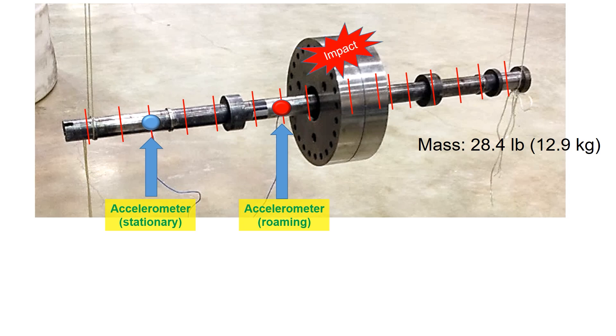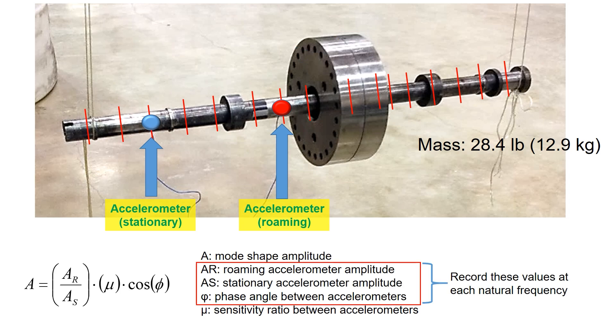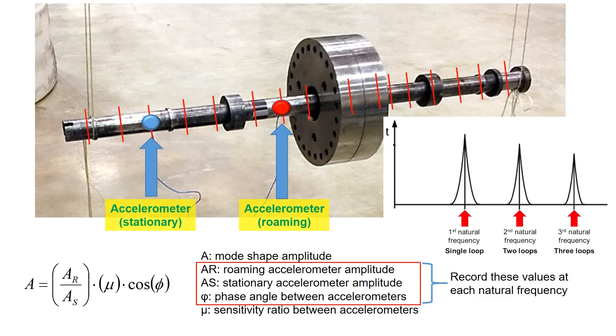Impact. Once the signal is recorded in the data acquisition, record the AR, AS, and the phase angle between the accelerometers at each natural frequency.